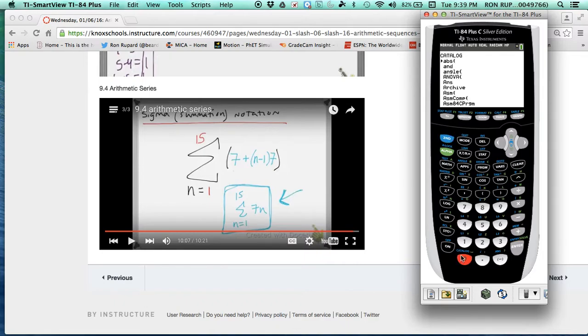then hit enter. Then immediately after that, you're going to go back to the catalog, back to the S's, and you're going to do sequence, which should show up a lot quicker. Just keep hitting down right there, sequence parentheses, because this is what we're doing. This is based off an arithmetic sequence.